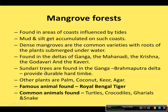Sundari trees — also called mangrove trees — are found in the Ganga-Brahmaputra delta and provide durable hard timber. This kind of forest is called Sundarbans or mangrove forest. Other plants found here are palm, coconut, keola, and agar.